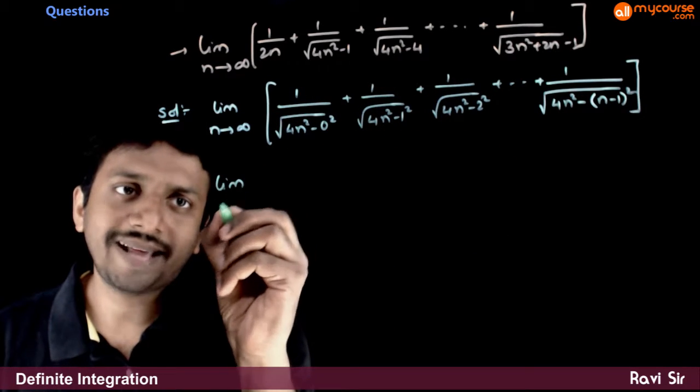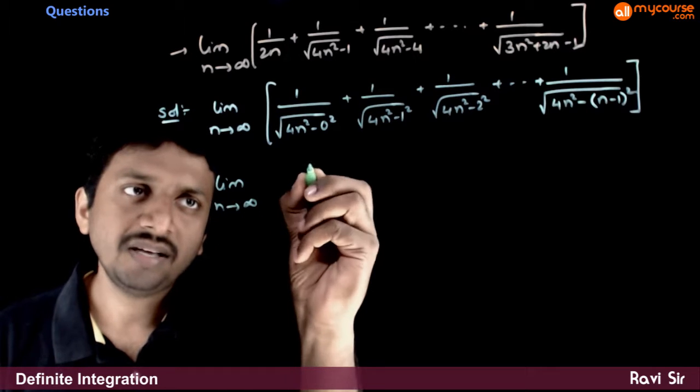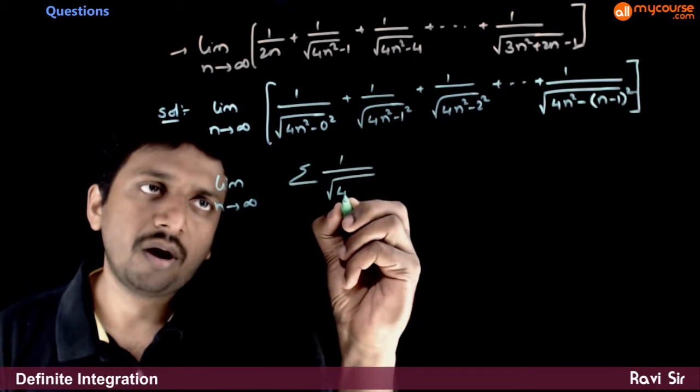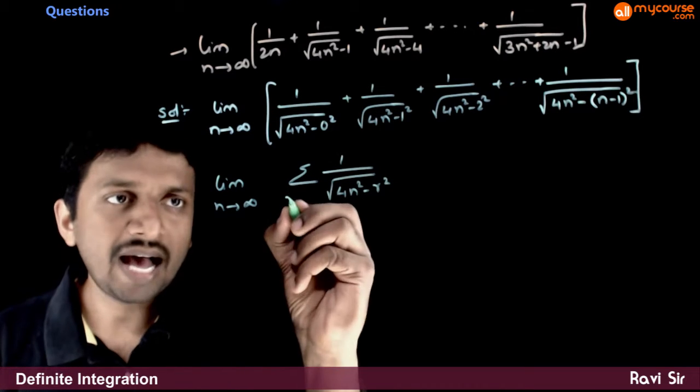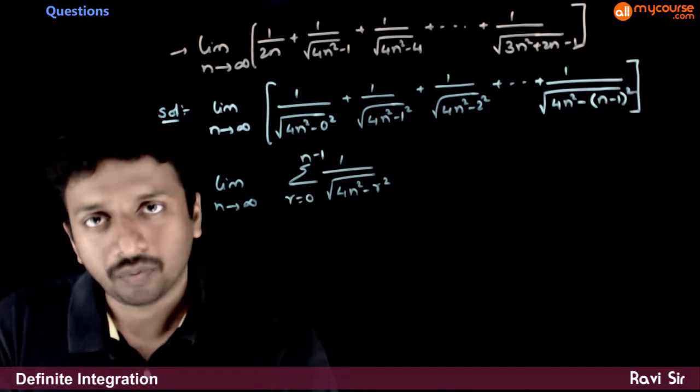Now, I can express this as sigma. Sigma 1 by root of 4n square minus r square, r is going from 0 to n minus 1.